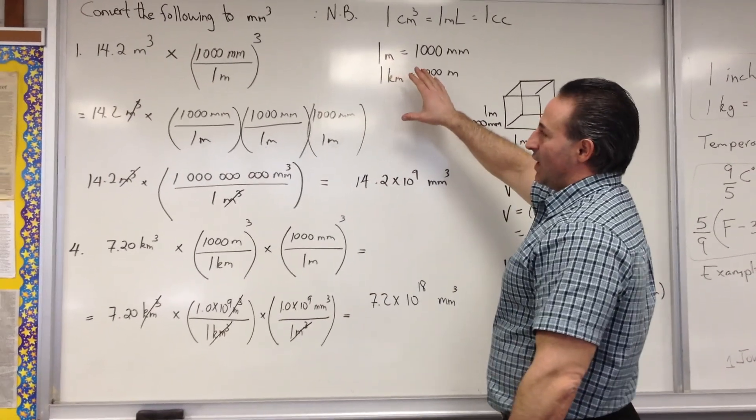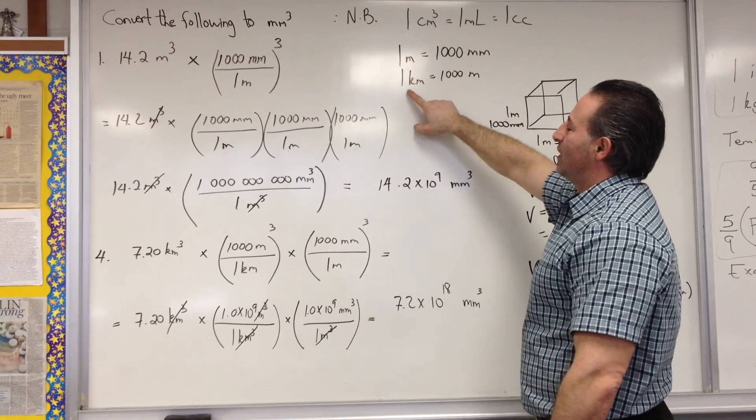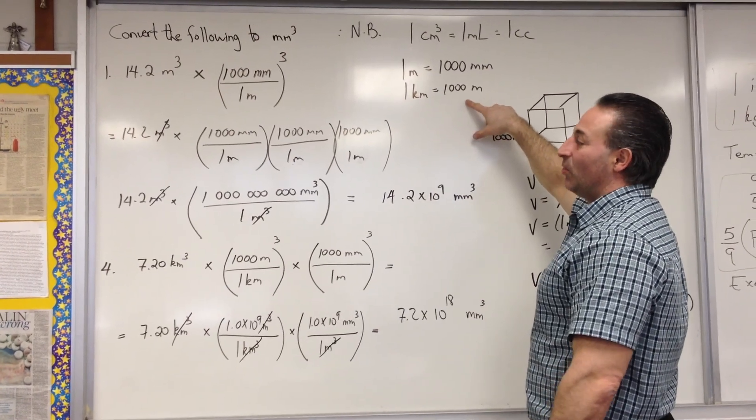The two linear conversion factors we need to know to do these calculations is that 1 meter is equal to 1,000 millimeters, and that 1 kilometer is equal to 1,000 meters. That's all we need to know.